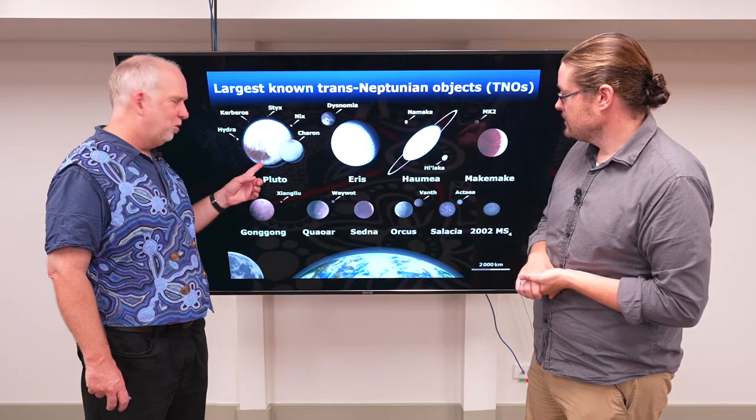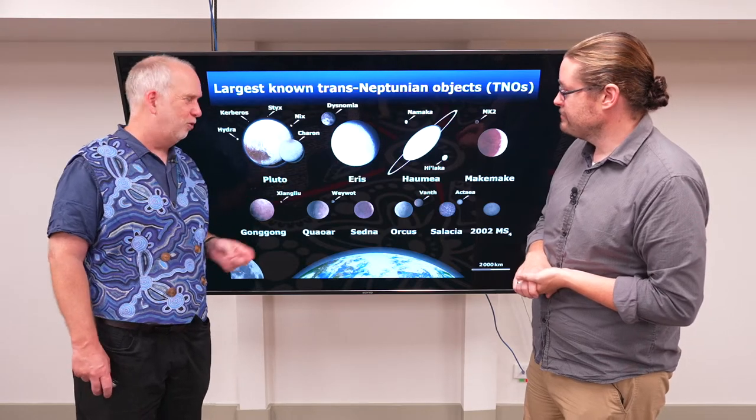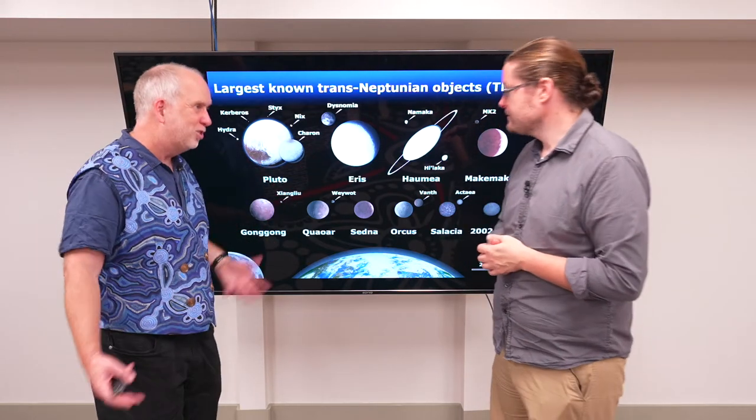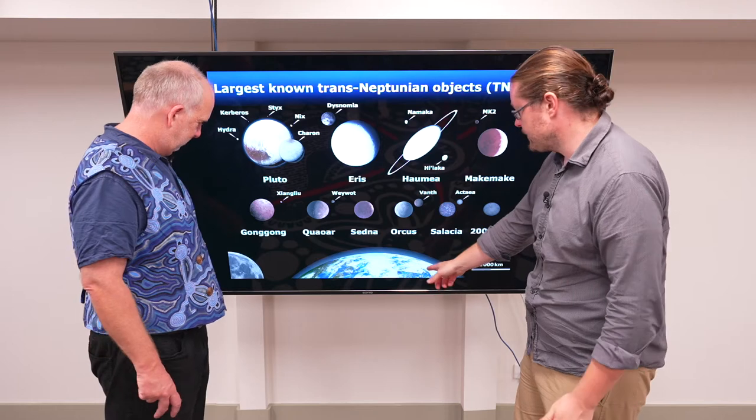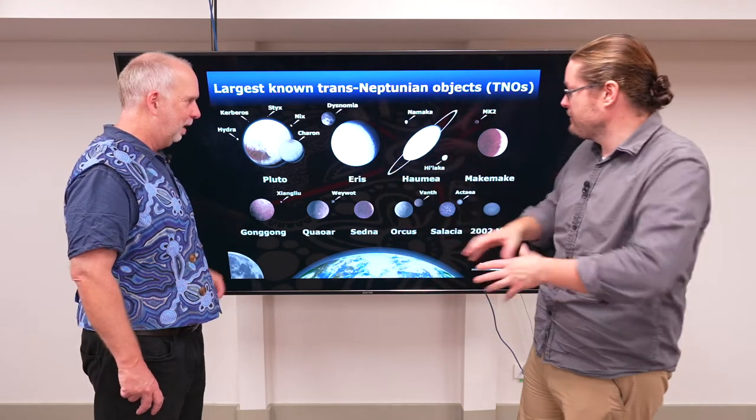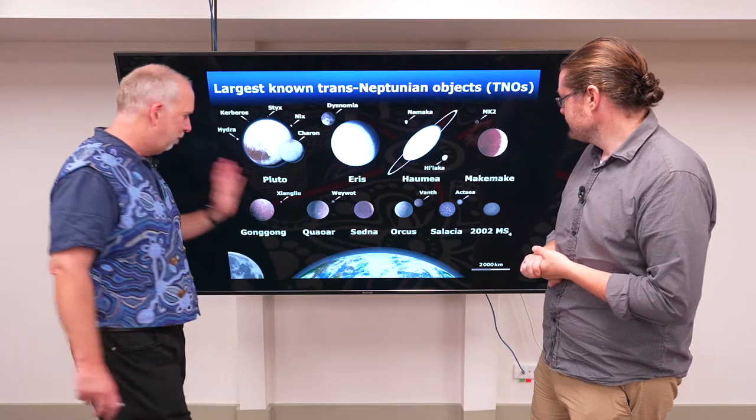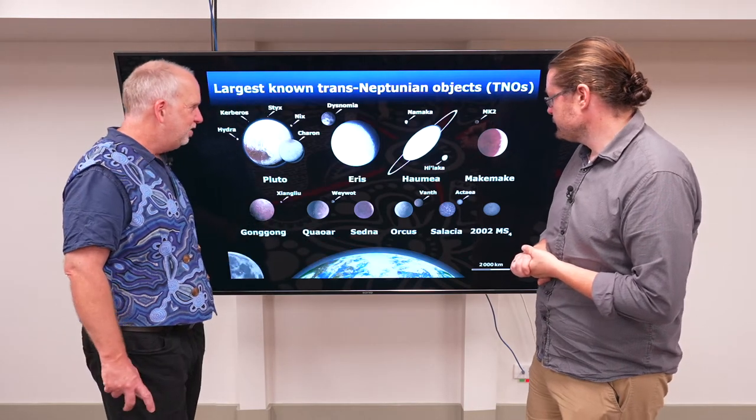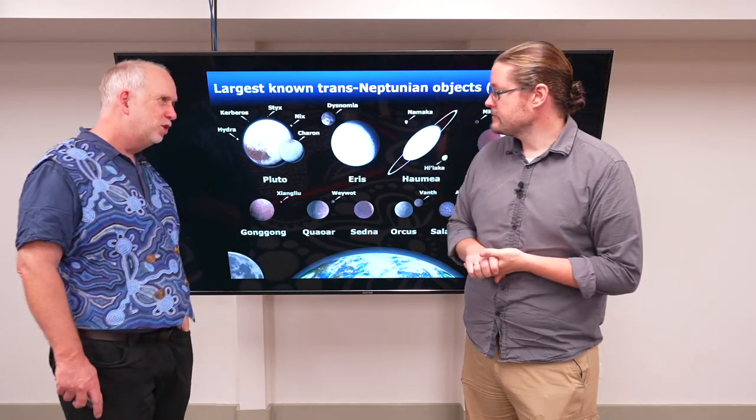We now know that Pluto is very marginally bigger than Eris, but for a long time Eris was thought to be very marginally bigger. They're pretty much the same. This is the Earth to scale and the moon. So these are still pretty small on the scale of things. And then there's Haumea and Makemake and a whole bunch of other ones. And you can see that Pluto doesn't stand out that much.